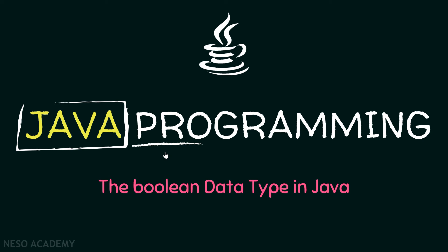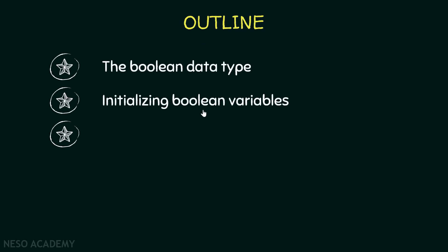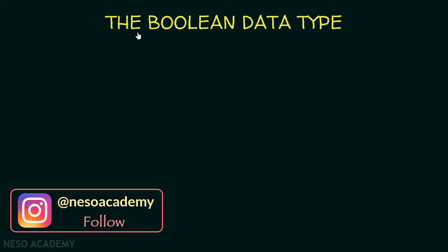Hello friends, and welcome back. In this lecture we will talk about the boolean data type in Java. Here is our outline: we will talk about the boolean data type, initialize some boolean variables, and finally see a small example about conditions in Java. So let's get started.